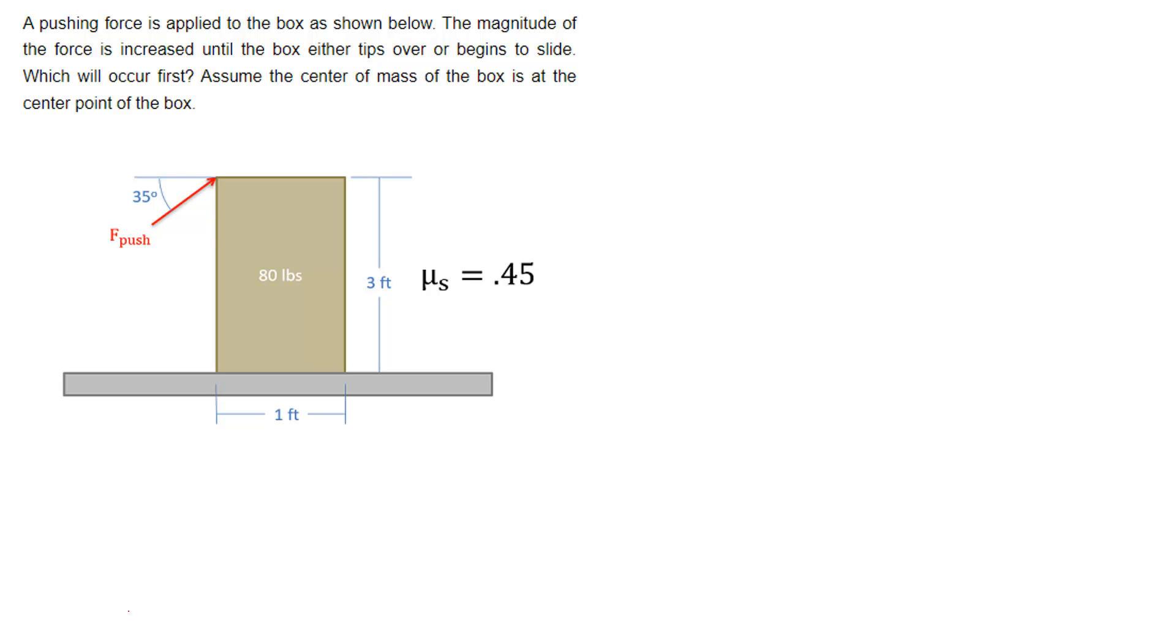So we're going to start with slipping. For this, our free body diagram is going to be as follows. We're going to have our pushing force over here on the side, we're going to have our 80 pound gravity force here in the center, and we're going to have Fn and the friction force.